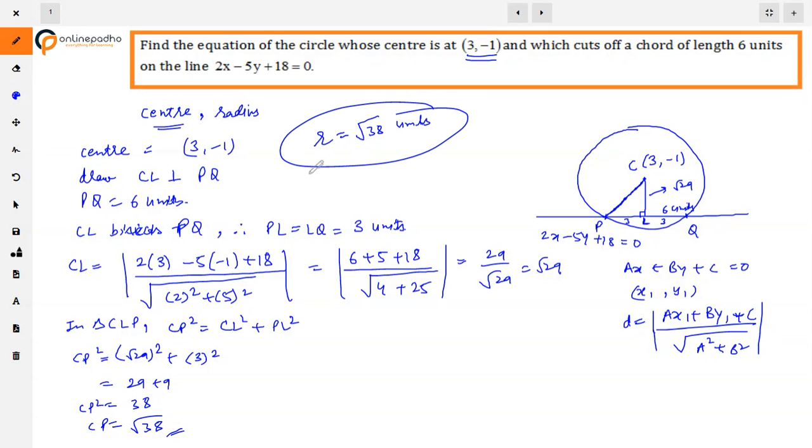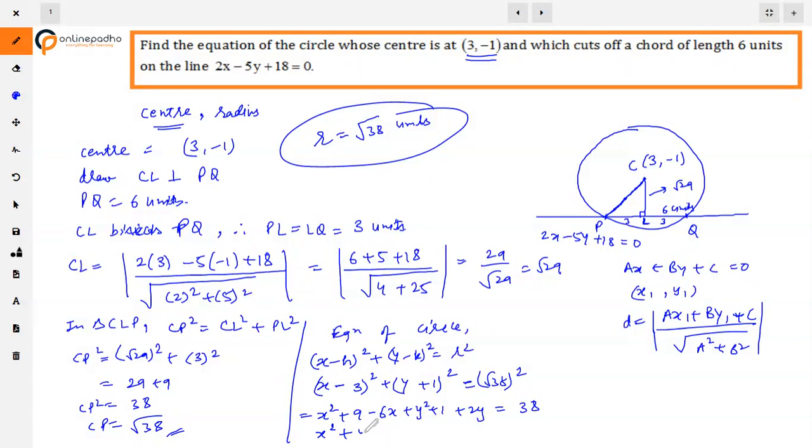Now equation of circle: (x - h)² + (y - k)² = r². Here h = 3, so (x - 3)² + (y + 1)² = (√38)². Opening this: x² - 6x + 9 + y² + 2y + 1 = 38. So x² + y² - 6x + 2y + 10 - 38 = 0, which gives x² + y² - 6x + 2y - 28 = 0. This is the equation of the circle.